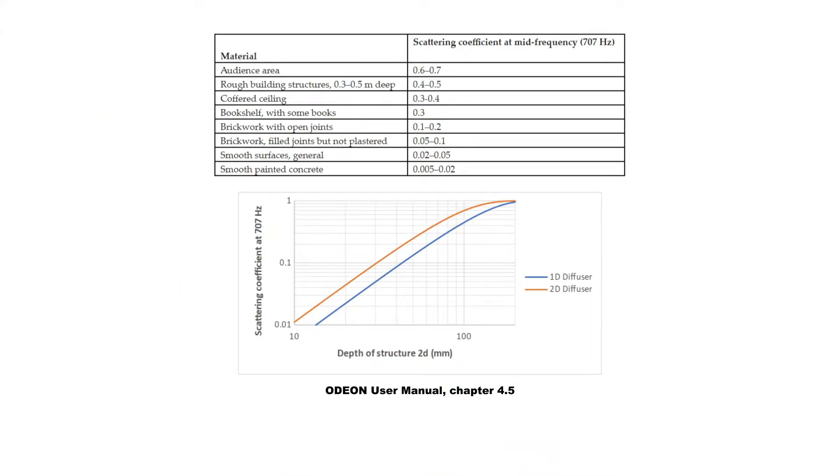Additionally, in chapter 4.5, we have a table and curves with scattering coefficients for different cases. The values in the table are for complex surfaces that are modeled as flat surfaces, and the curves apply exclusively to pyramidal wedges.